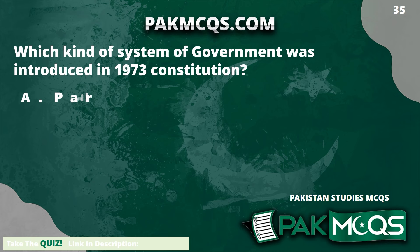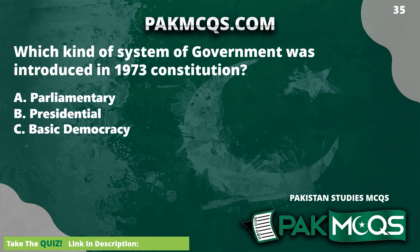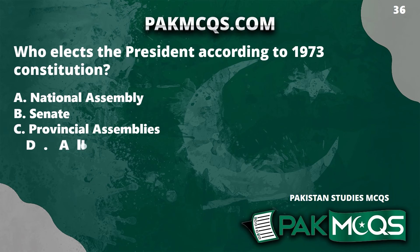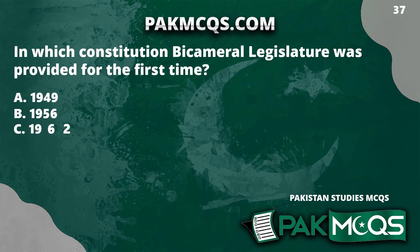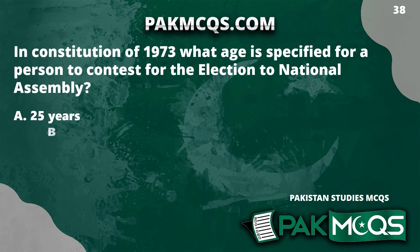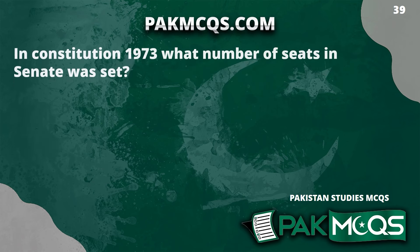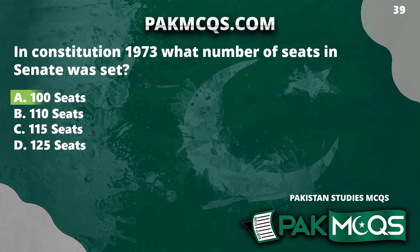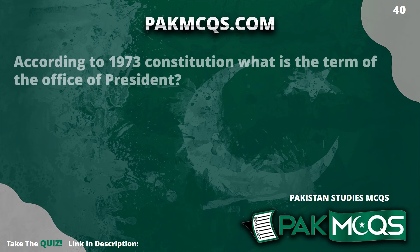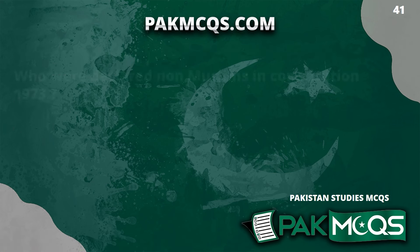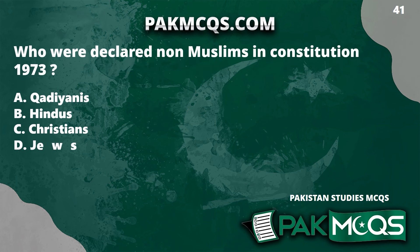Which kind of system of government was introduced in the 1973 constitution? Parliamentary. Who elects the president according to the 1973 constitution? All National Assembly members, Provincial Assemblies and Senate. In which constitution was bicameral legislature provided for the first time? 1973 constitution. What age is specified for a person to contest election to the National Assembly? 25 years. What number of seats in the Senate was set in the 1973 constitution? 100 seats. What is the term of office of the president according to the 1973 constitution? 5 years. Who were declared non-Muslims in the 1973 constitution? Qadianis.